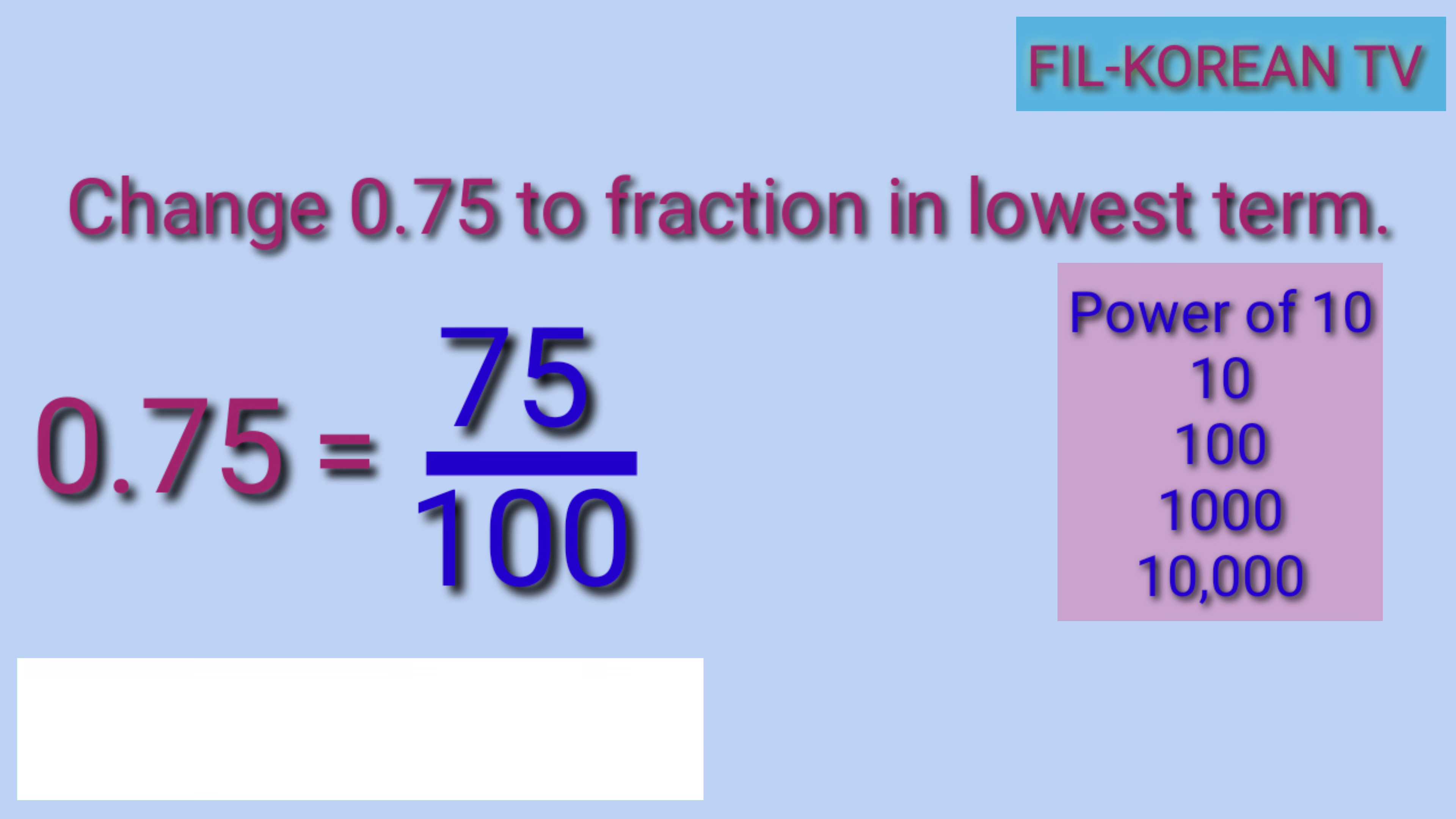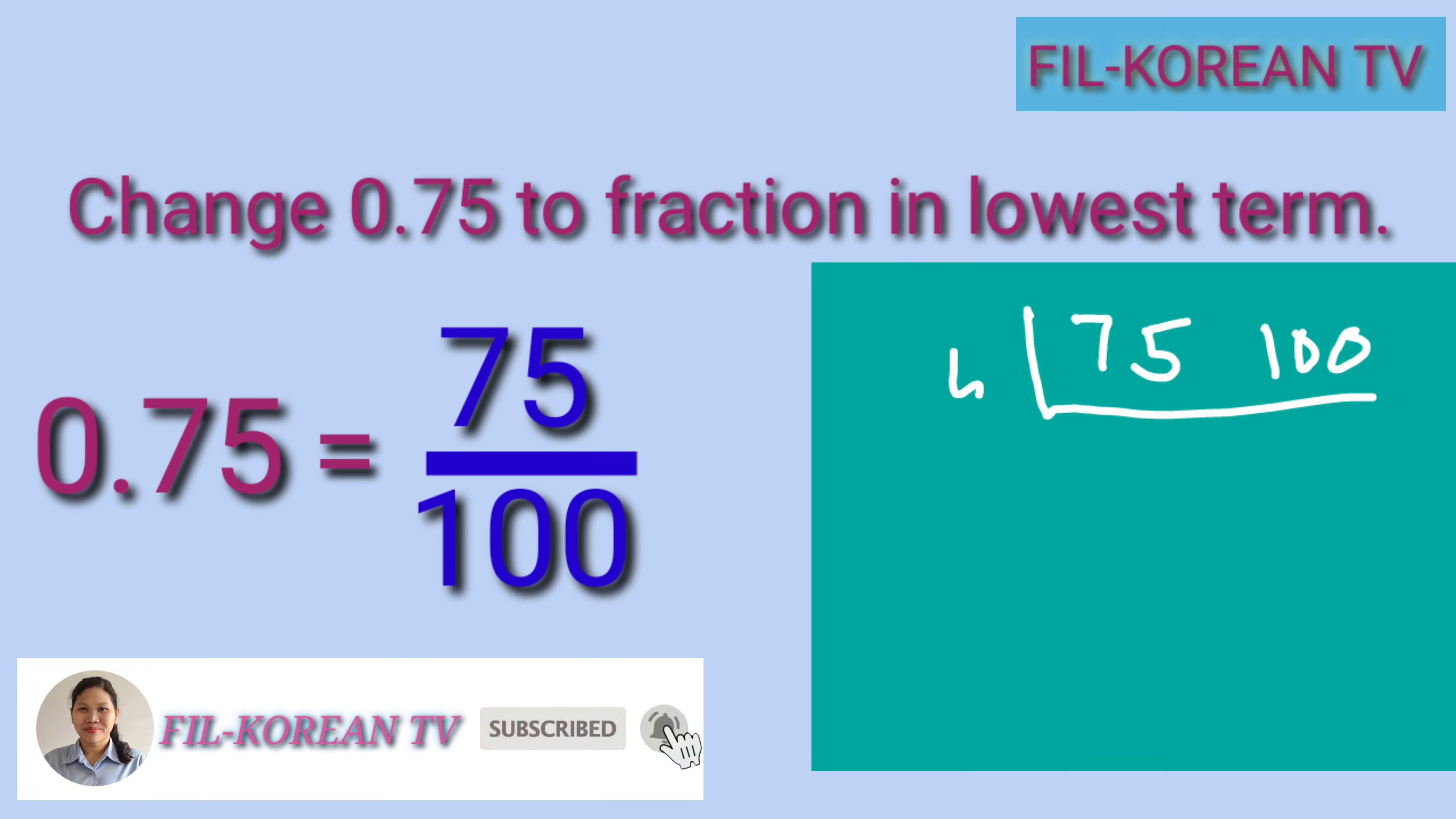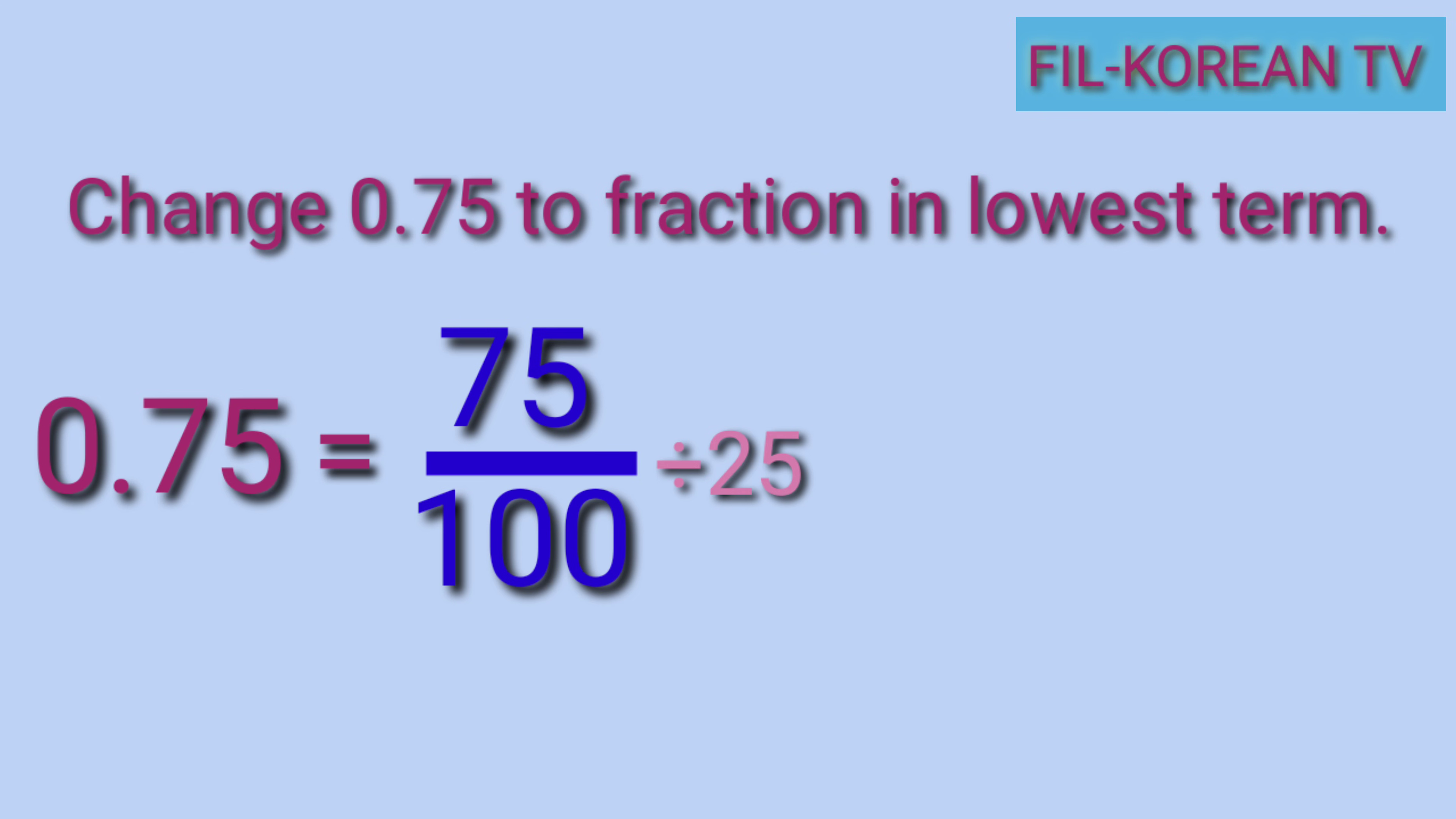Next step is to reduce the fraction to lowest term. We need to divide the numerator and the denominator by their GCF. So, if we are going to get the GCF of 75 and 100, their GCF is 25. Then divide, 75 divided by 25 equals 3. 100 divided by 25 equals 4. So, 75 hundredths is 3 fourths in fraction.